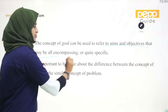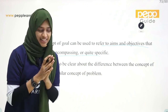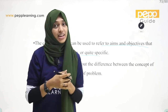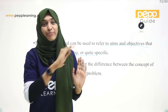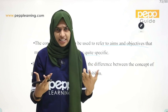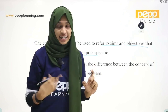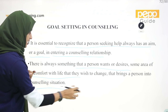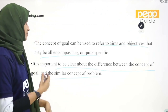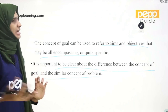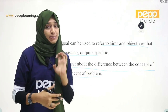In that situation, we have goals and objectives. It is important to be clear about the difference between the concept of goal and the concept of objective. We have to set a goal. What is the problem? What is the objective? We have to ask the question of the problem.